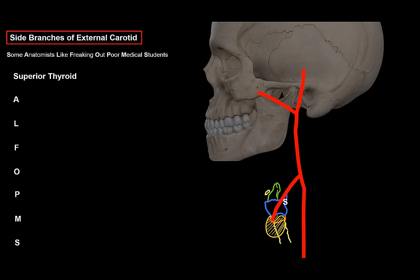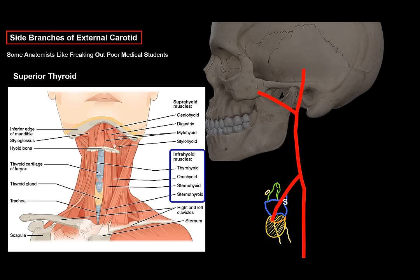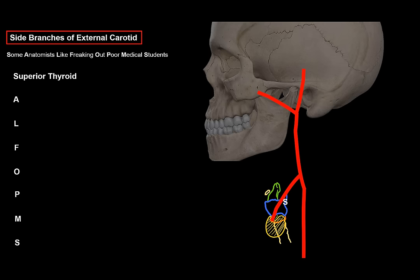On its way down, the superior thyroid gives off muscular branches for the strap muscles of the neck — the thyrohyoid, the sternohyoid, and the omohyoid. It also supplies the middle region of the sternocleidomastoid muscle, and additionally gives off the superior laryngeal artery, which supplies the muscles of the larynx.